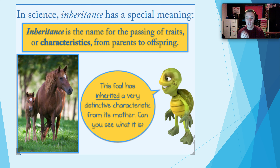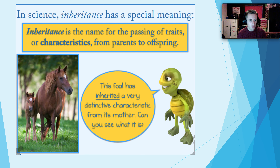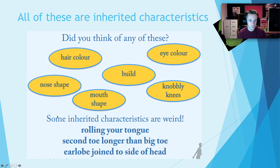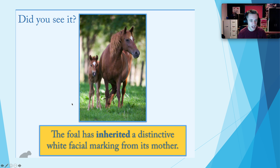However, some things they say do skip a generation — they go from grandparents into children. So this foal has inherited a very distinctive characteristic from its mother. Can you see what it is? If we have a look here, we can see that this bit here — the foal also has it. This is an inherited characteristic; this mark has been passed down, so it has been inherited.